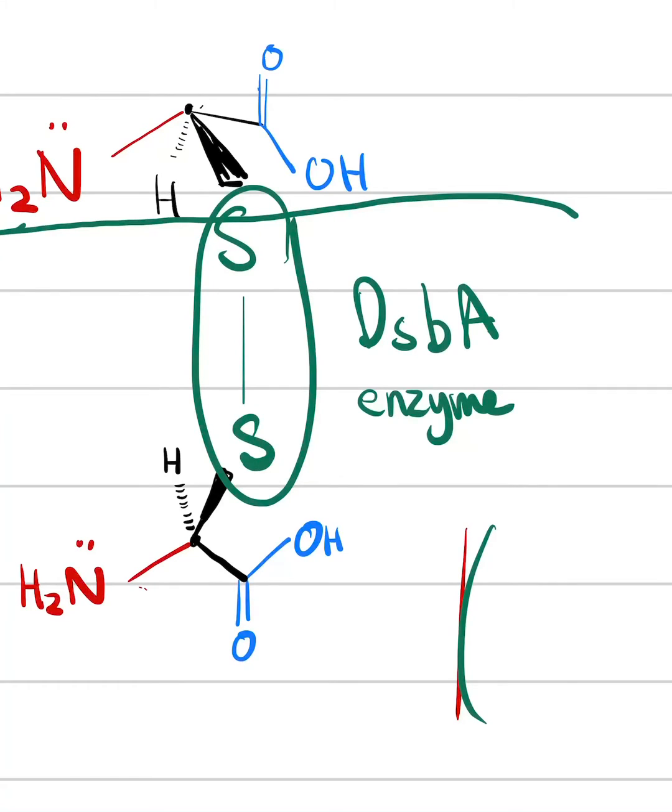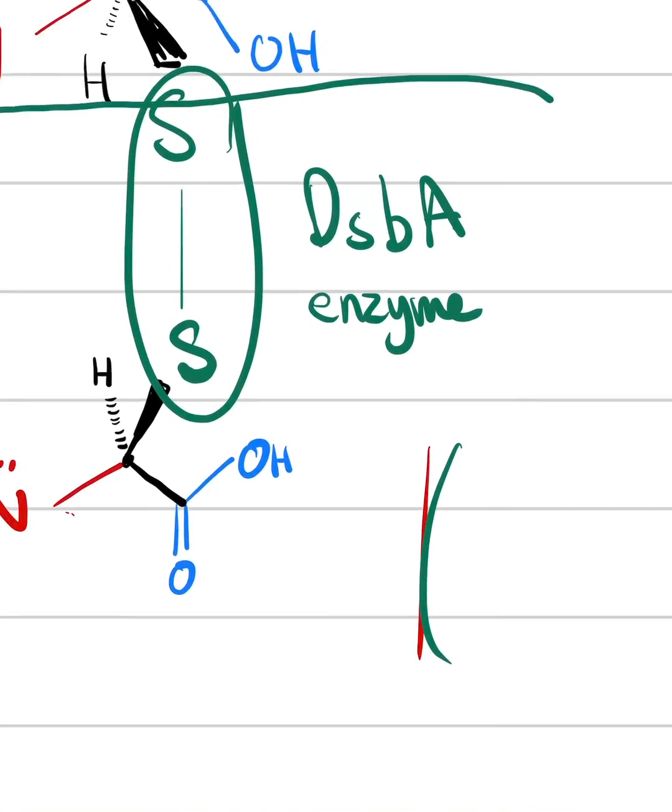So with the help of a DSP enzyme, the hydrogens are drawn out of the picture, and a disulfide bond is made. And this kind of brings these two polypeptides together, and this is how we form proteins, basically.